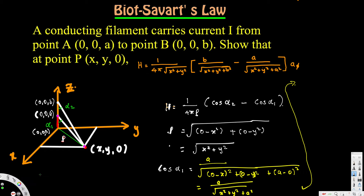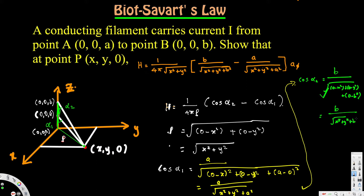Now let's calculate cos alpha two. That's adjacent over hypotenuse again. For alpha two, the distance is b, so b is the adjacent. Therefore, cos alpha two equals b over square root of x squared plus y squared plus b squared.